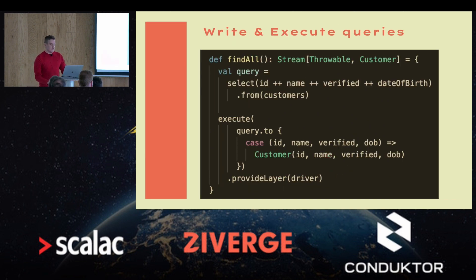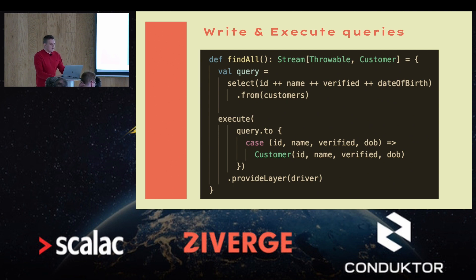Let's see how findAll is implemented. We have a simple query that selects four columns from the table. Before executing, we can map the resulting tuple to our user-defined data type, and then execute returns a stream of Customer. We just provide the layer.